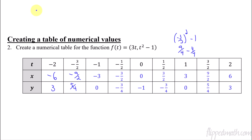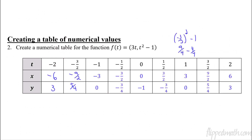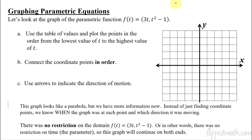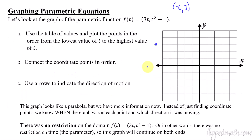Now let's graph these coordinate points. We have to do this in order — we start with the lowest value of t to the highest value of t. The lowest t value is negative 2, giving coordinate point negative 6, 3. I apologize — negative 6 is off the graph here, so just pretend it's on the graph. The next point is negative 9 halves and 5 fourths, which is about negative 4.5 comma 1.25. Go ahead and pause the video, take all these coordinate points, put them in order, connect them, and let's see what you get.